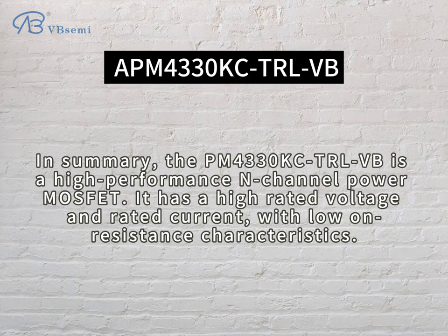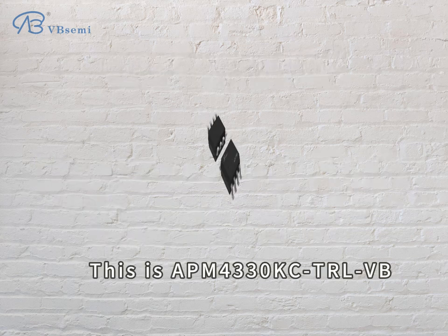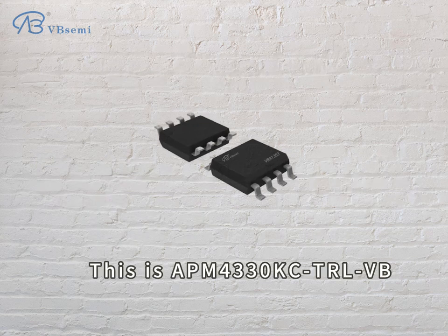In summary, the APM4330 KCTRLVB is a high-performance N-channel power MOSFET. It has a high rated voltage and rated current, with low on-resistance characteristics. This is the APM4330 KCTRLVB.